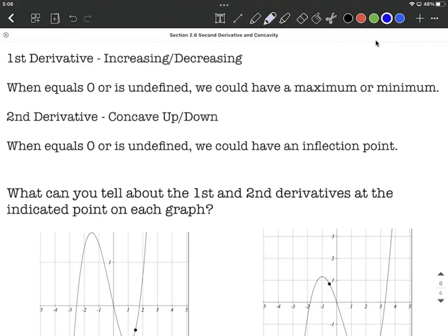The first derivative is going to tell us if the graph is increasing or decreasing. So if the first derivative is positive, the graph is increasing. If it's negative, then the graph is decreasing at that point.